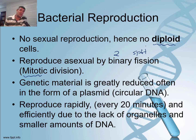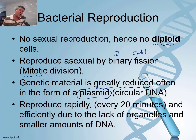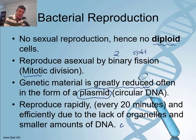One of the things that makes this process much easier in bacteria is that the genetic material is greatly reduced. Often we're looking at something called a plasmid — a circular piece of DNA. The cells themselves are much simpler; they don't have all the complex organelles found in eukaryotic organisms. Therefore reproduction in bacteria is very rapid and very efficient, mainly due to that lack of organelles and the smaller amounts of DNA, meaning bacteria can reproduce very, very quickly. This is fantastic for colonisation and rapid population growth.